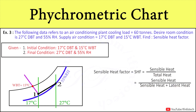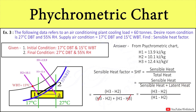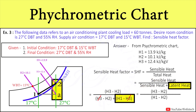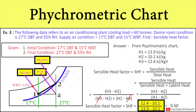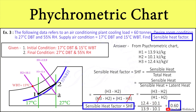In order to calculate sensible heat and latent heat, first we need to calculate enthalpy during process 1 to 2. The difference of enthalpy between point 1 to A is the sensible heat, and the difference of enthalpy between point 2 to A is the latent heat. So putting the values of H1, H2, and H3 into the formula and calculating, we get the sensible heat factor as 0.6.